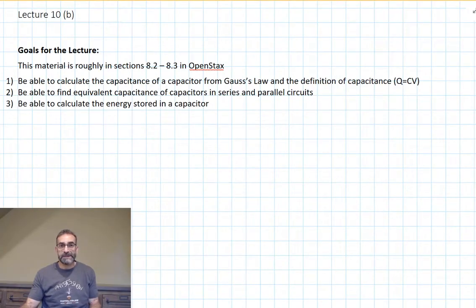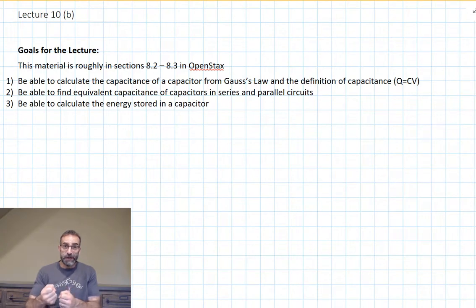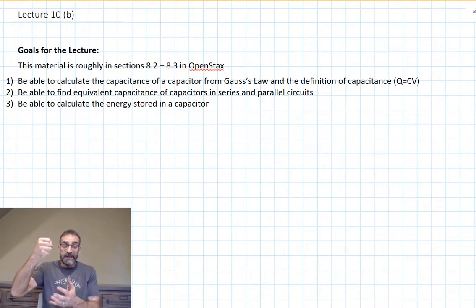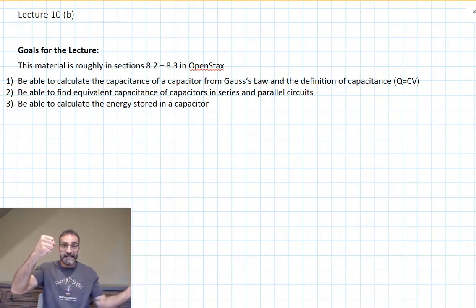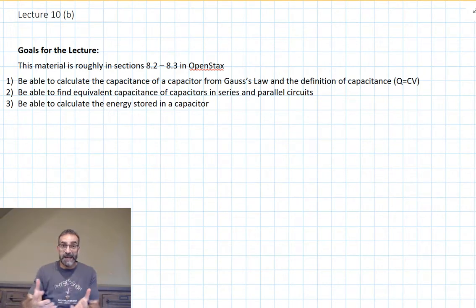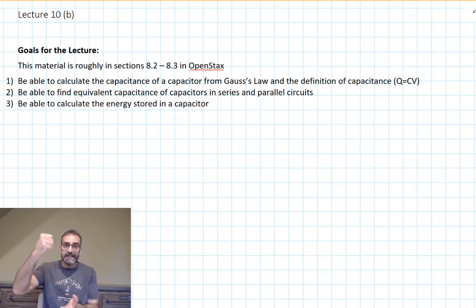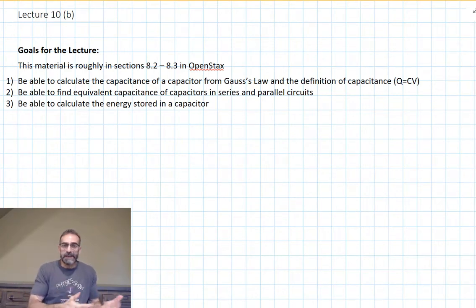One of the main uses of capacitors is to store energy. Let's think about gravity for a minute. If I have a motor that can do work on a mass by lifting it up in a gravitational field, I'm doing work on the system, increasing the system's potential energy. I can disconnect my motor and leave the mass at this higher position, and there's extra potential energy stored in the system. And then at some later time, I can release the mass, it'll gain kinetic energy, and I can harvest that and get some of that energy back out of the system.